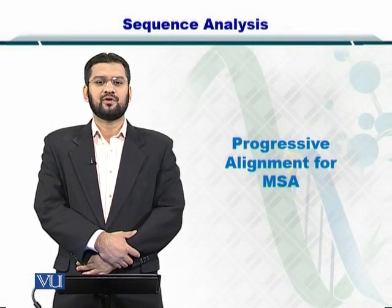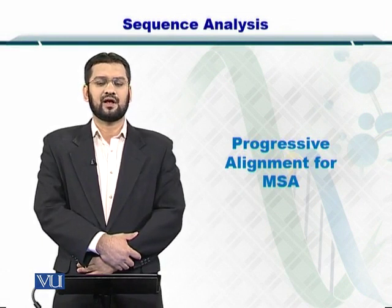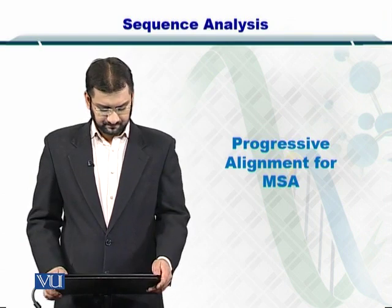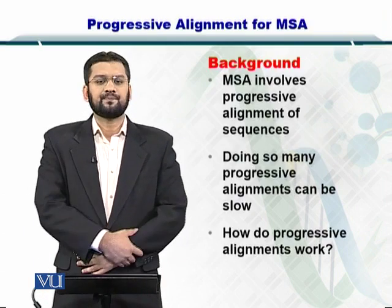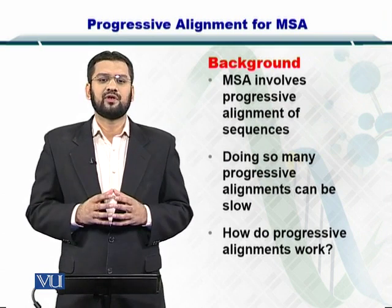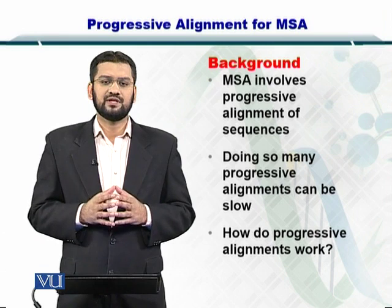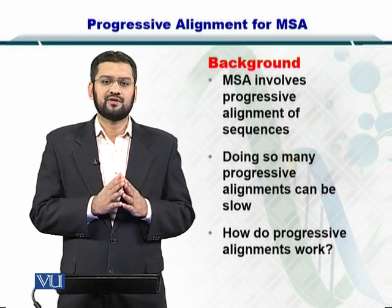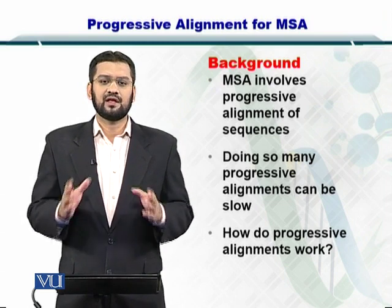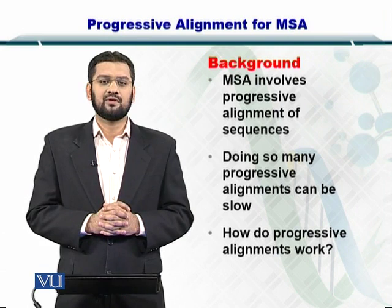Dear students, in this module we are going to discuss the progressive alignment for multiple sequence alignment, or simply progressive alignment for MSA. MSA involves progressive alignment by using pairwise sequence alignment repeatedly. You initially align two sequences, create such sequence alignment pairs, and then align the pairs in order to obtain an overall multiple sequence alignment.